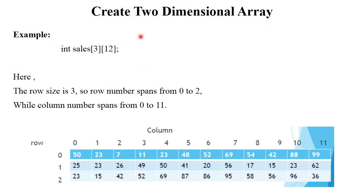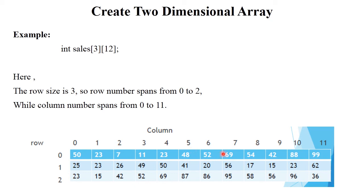Here is how to create a two dimensional array. For example: int cells[3][12]. The data type is integer, array name is 'cells', 3 means rows and 12 means columns. Array is always in the format of rows and columns. Row size is 3 and spans from 0 to 2 — there are total 3 rows. Array always starts with 0, so rows go from 0 to 2. There are total 12 columns, so columns go from 0 to 11. These are called data index of rows and data index of columns, and the stored values are called data elements. This is the concept of two dimensional array in tabular or matrix format.